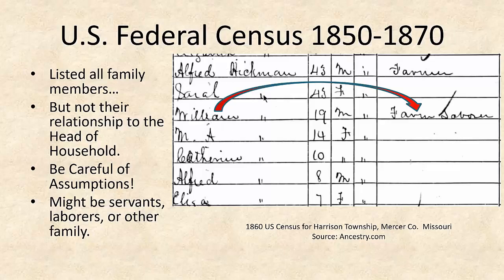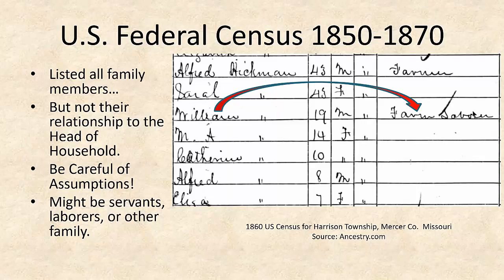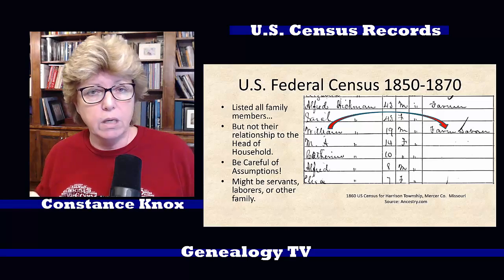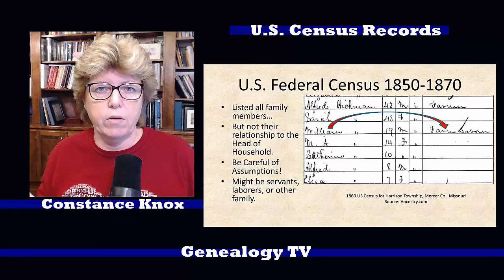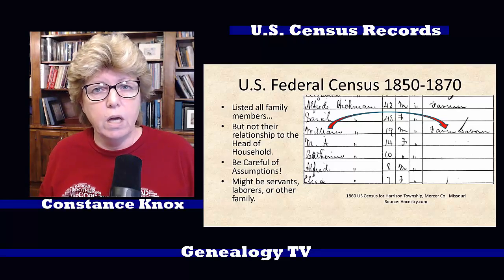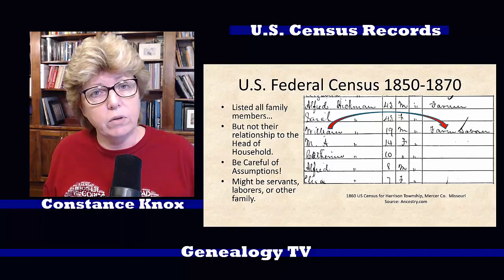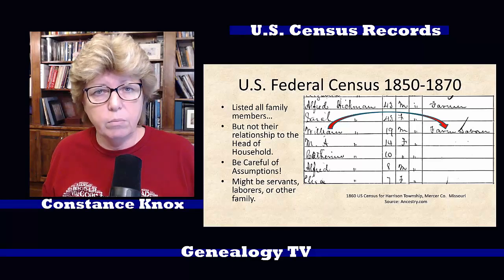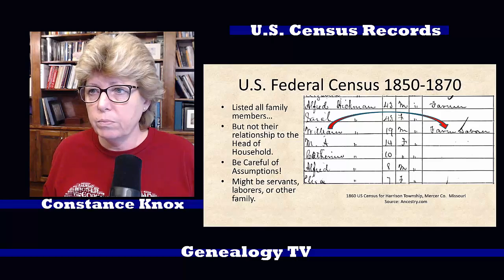I'm going to assume right now that Sarah Hickman is Alfred's wife. Now here we have William, and they give us the little ditto marks here showing that these are the same last names. We have William Hickman, who is 19 years old, and he is a male and a farm laborer. One would assume that William is the son of Alfred Hickman, but not necessarily so. Keep in mind that back in the farming days, young people were loaned out to other families to help either run the household or help run the farm. So this William Hickman could be a nephew, or maybe a much younger brother, but it's not likely. Most likely he is a son, but until we prove that, we don't know for sure. Be mindful of that.